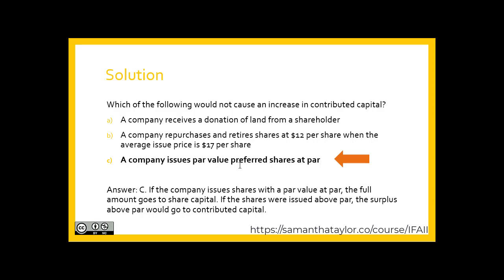Option B: a company repurchasing and retiring shares for less than the average issuance price would result in a credit to contributed surplus — that is, contributed capital — for the difference between the cash flowing out the door and the debit to the share capital account. Option C would not increase contributed capital, which is why it is the correct answer. When a company issues par value preferred shares at par, they would debit cash and credit share capital, not contributed capital, for these preferred shares.